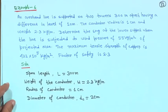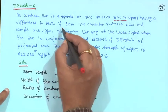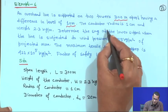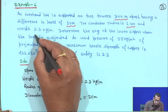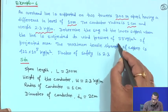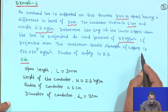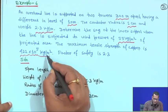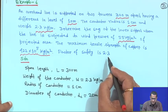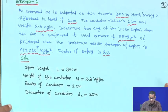Next we take example 6. An overhead line is supported on 2 towers 300 meter apart, having a difference in level of 10 meter, so they are not at the same level. The conductor radius is 1 centimeter and weight is 2.3 kg per meter. Determine the sag at the lower support when the line is subject to wind pressure of 55 kg per meter square of the projected area. The maximum tensile strength of copper is 422 into 10 to the power 5 kg per meter square and factor of safety is 2.3.